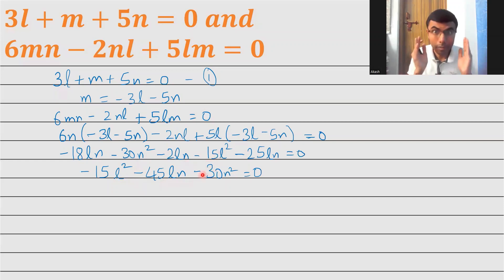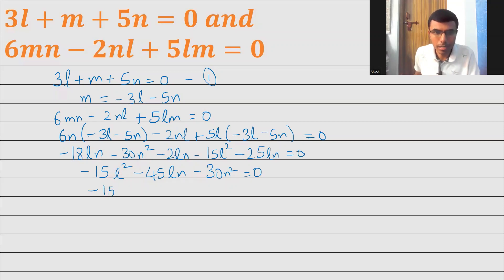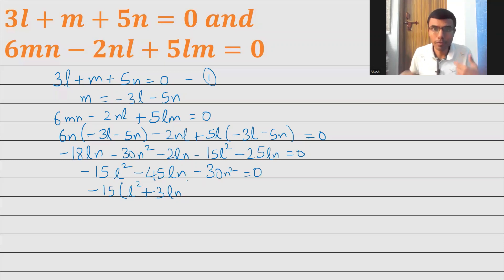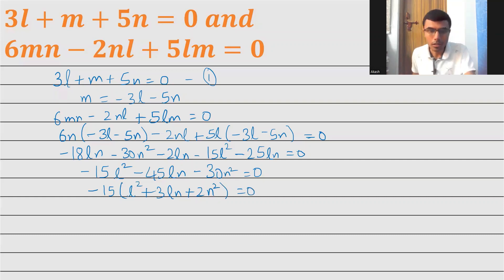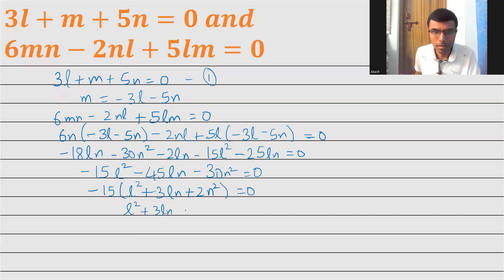Now in this entire equation I can take minus 15 common. If I take minus 15 common, I'm left with L squared plus 3LN plus 2N squared equal to 0. Sending minus 15 to the other side, I'm left with L squared plus 3LN plus 2N squared equal to 0.